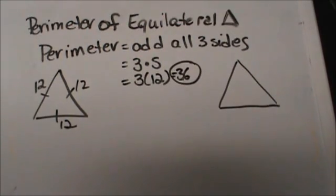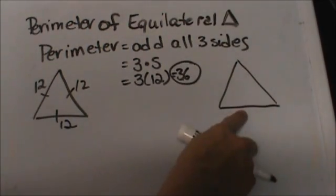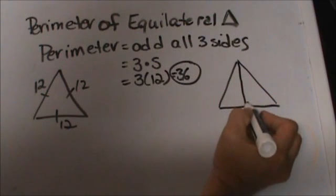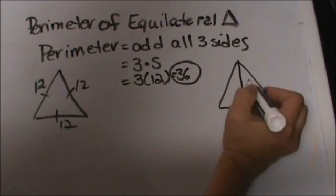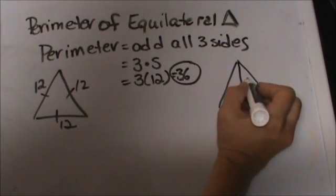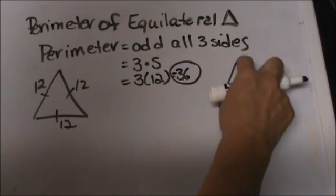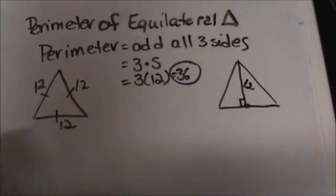Now let's look at one that is a little more difficult. Let's look at this one. Let's say that we knew the altitude this time was 12 instead of the side being 12. Well the altitude is actually shorter than that side.